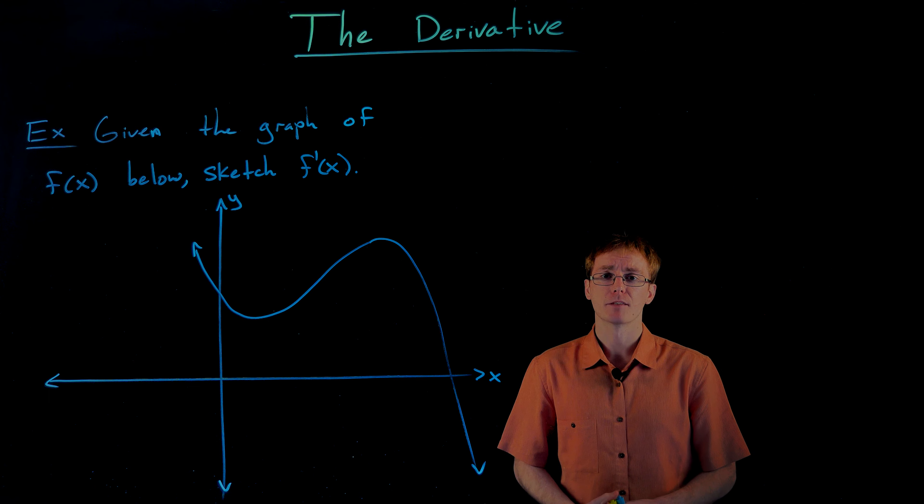So what should our first step be in graphing the derivative of the function? Well if we think back to how we graph most of our functions, one of the first things we look for are zeros or x-intercepts. So let's start by trying to find the zeros or x-intercepts of the derivative of our function from the graph of the function itself. The first thing we're going to do is find where the derivative of our function is actually equal to zero.